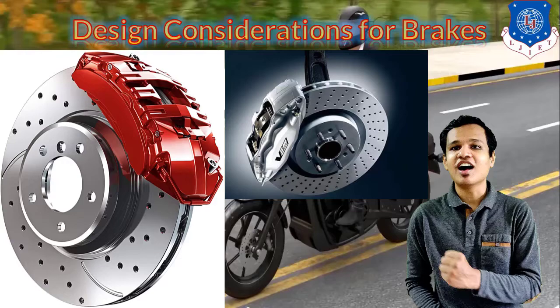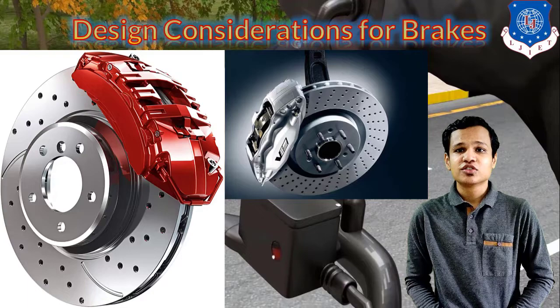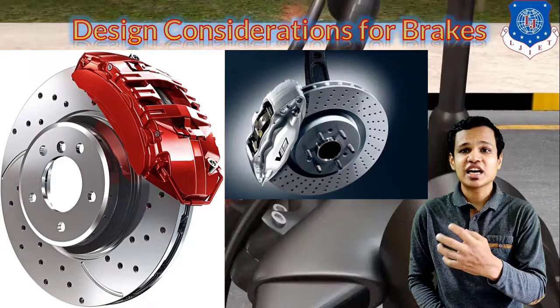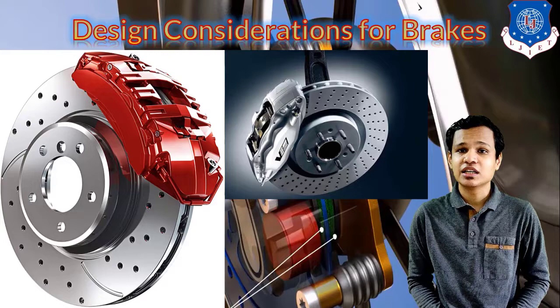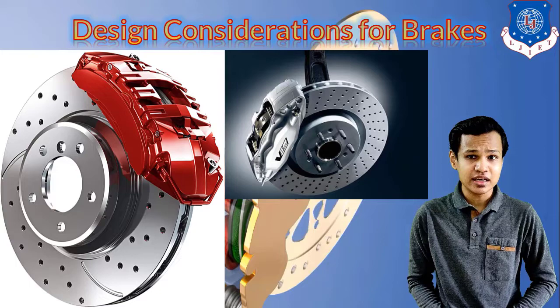First we will see the design considerations that are required to be kept in mind whenever we are designing a brake, and what criteria need to be fulfilled when using the brakes. The first criteria is the vehicle parameters — parameters given for the vehicle such as the weight, the ride height, and the wheelbase of the vehicle. These are the dimensions of the two-wheeler that need to be taken care of when designing the brake.